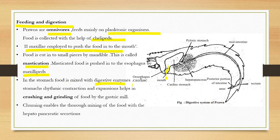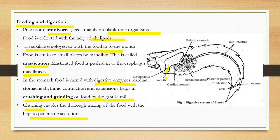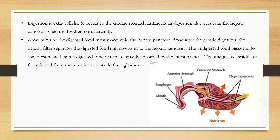In the stomach, digestive enzymes are secreted. The cardiac stomach undergoes rhythmic contraction and expansion, resulting in crushing and grinding of food by the gastric mill. This churning causes thorough mixing of the food with hepatopancreatic secretions.